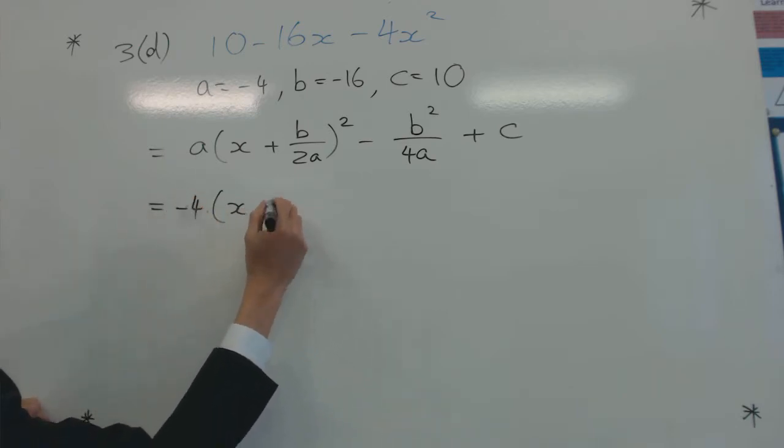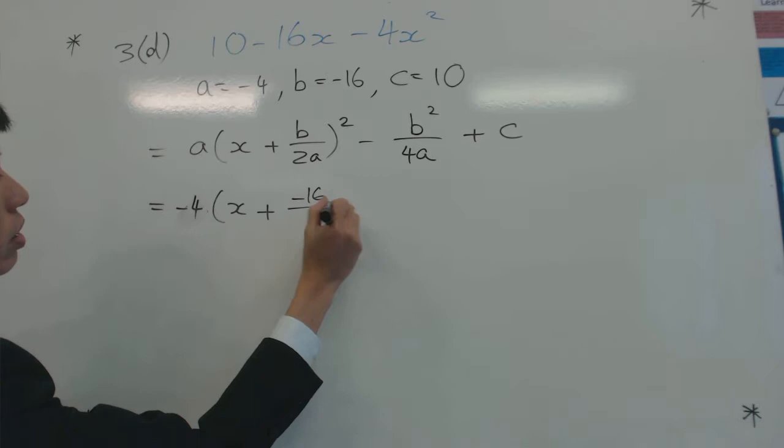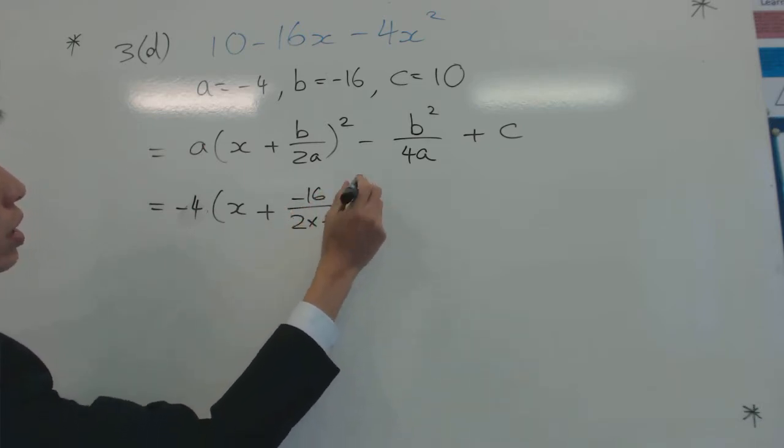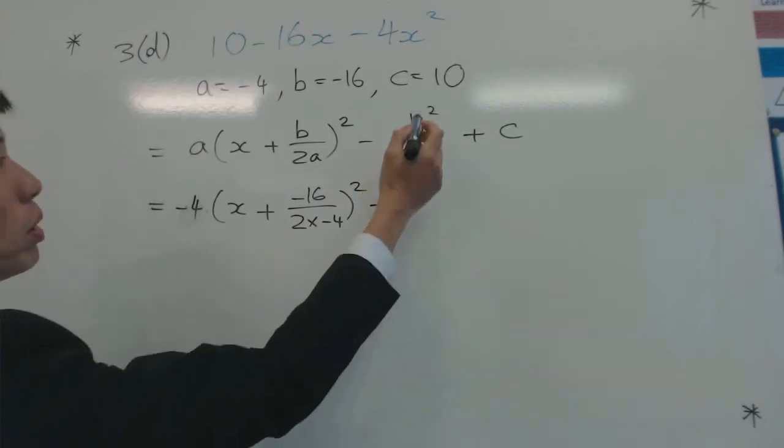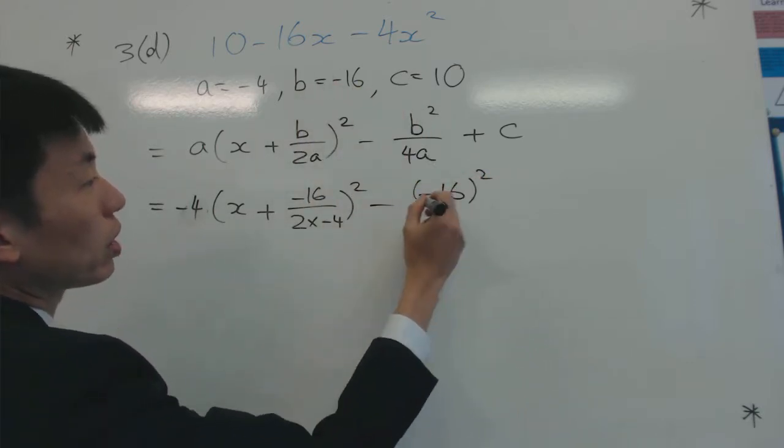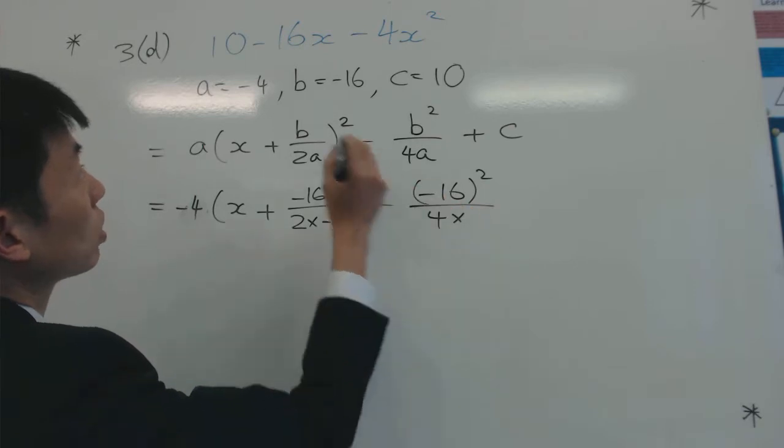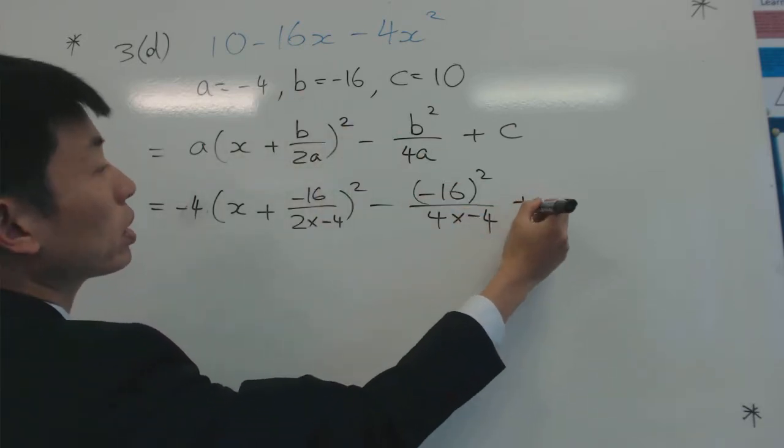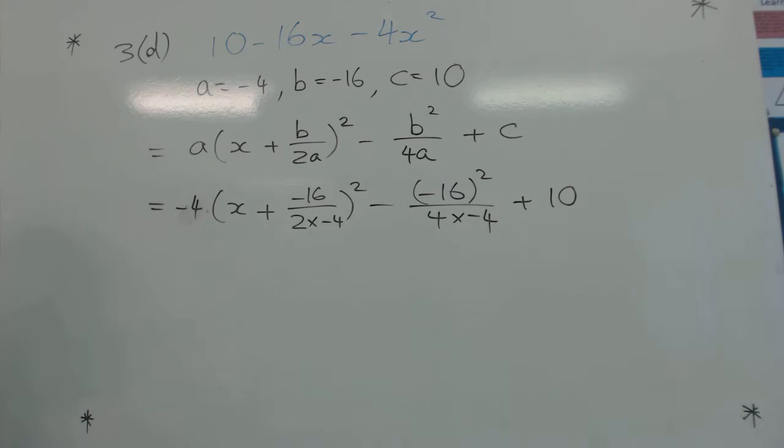...so plus b, which is minus 16, over 2 times minus 4. Minus b squared - minus 16 squared - over 4 times minus 4, plus the constant 10. Okay, so let's tidy this up.